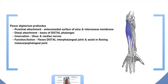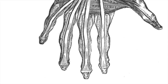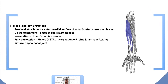The flexor digitorum profundus has its proximal attachment on the anterior medial surface of the ulna as well as the interosseous membrane, which is a membrane between the ulna and the radial bone. This muscle inserts into the base of the distal phalanges of the hand, as demonstrated in the diagram. It is innervated by both the ulnar and median nerves, and its function is to flex the distal interphalangeal joints and assist in flexing the metacarpophalangeal joints as well.